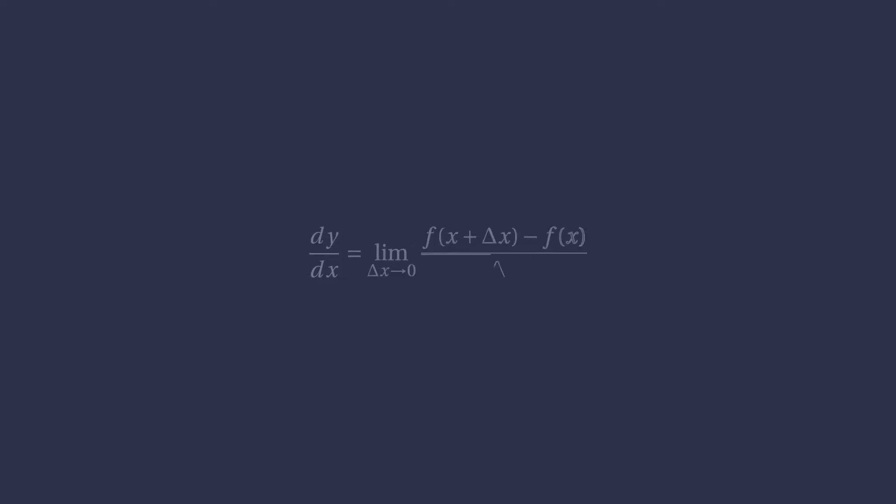The derivative of a function f at x is defined by this limit. Computers restricted to arithmetical operations can't take limits, so we can't use the definition directly, but we could approximate the value of the derivative considering small delta x's. Well, this formula is the basis for the finite differences method. But how good of an approximation is it really?